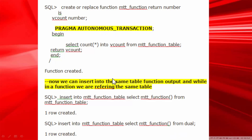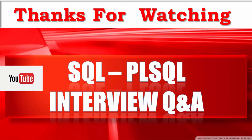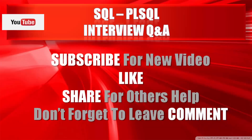Autonomous transaction with function: we create one function with autonomous transaction, and using that function we are able to insert into the table successfully. I hope after watching this video you have a clear idea about mutation and how to avoid it using autonomous transaction and other options. Thank you very much for watching — please don't forget to subscribe to the SQL and PL/SQL Interview Answers channel.